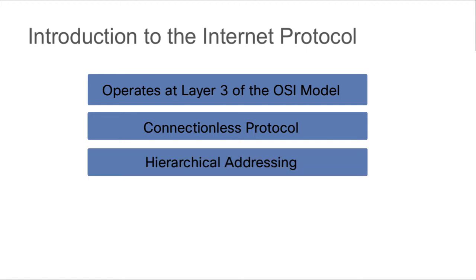IP uses hierarchical addressing. It is a 32-bit number. Part of that number is what we call a network ID, and the other part is the host ID. The network portion is kind of like a street that you live on, and the host ID portion is the house number. Having this separation allows us to route traffic towards a network, and once we're on that network, we look for a specific host.